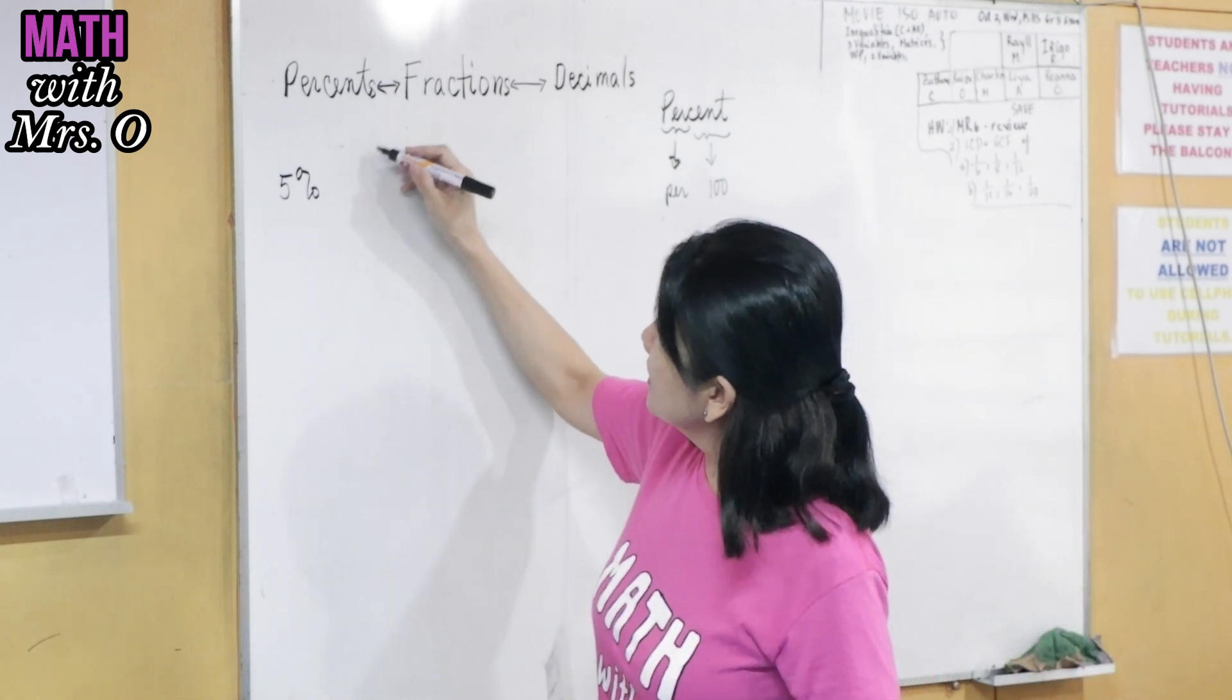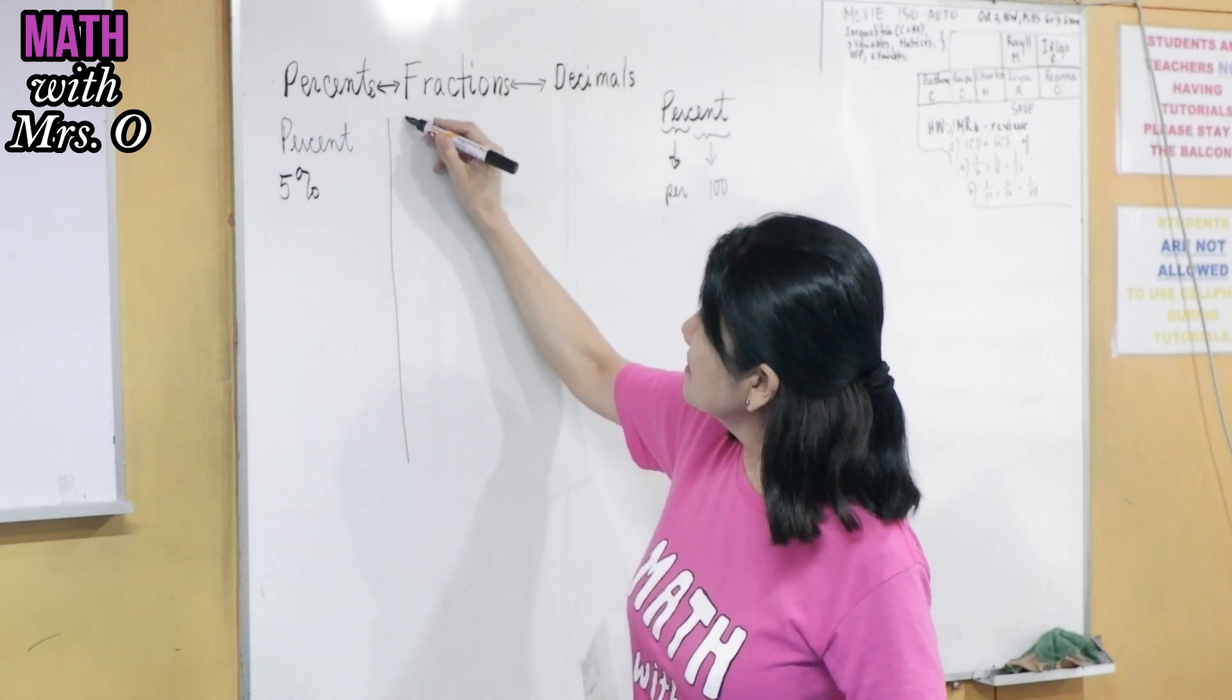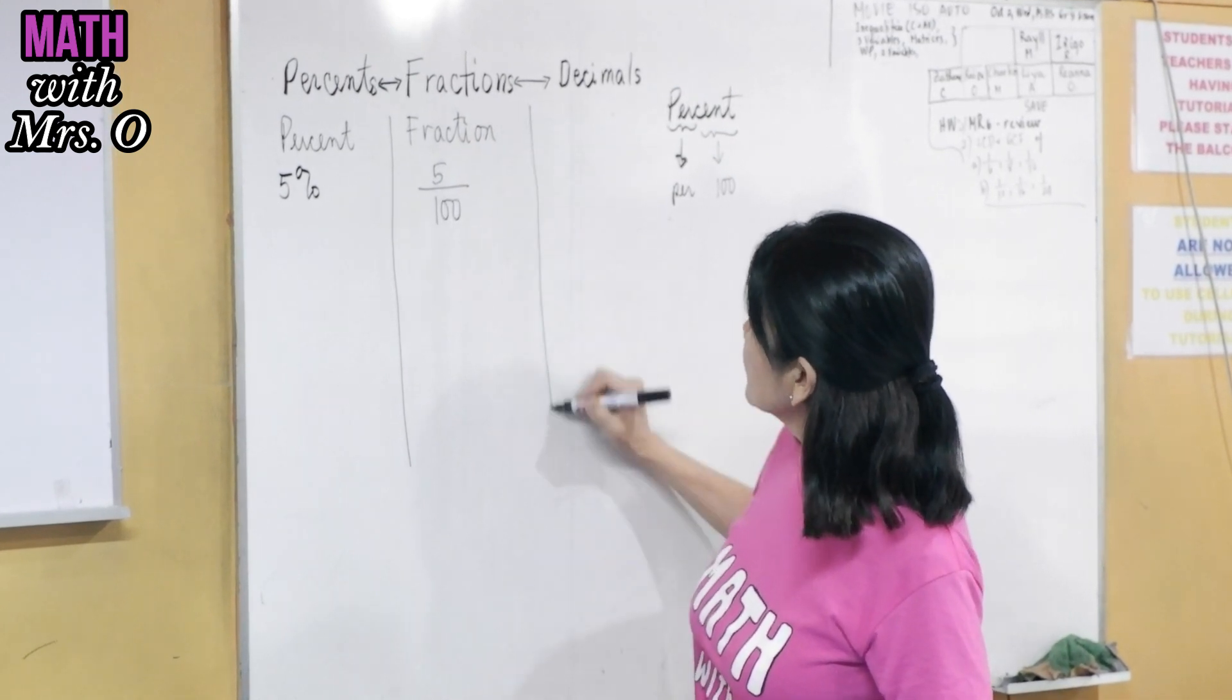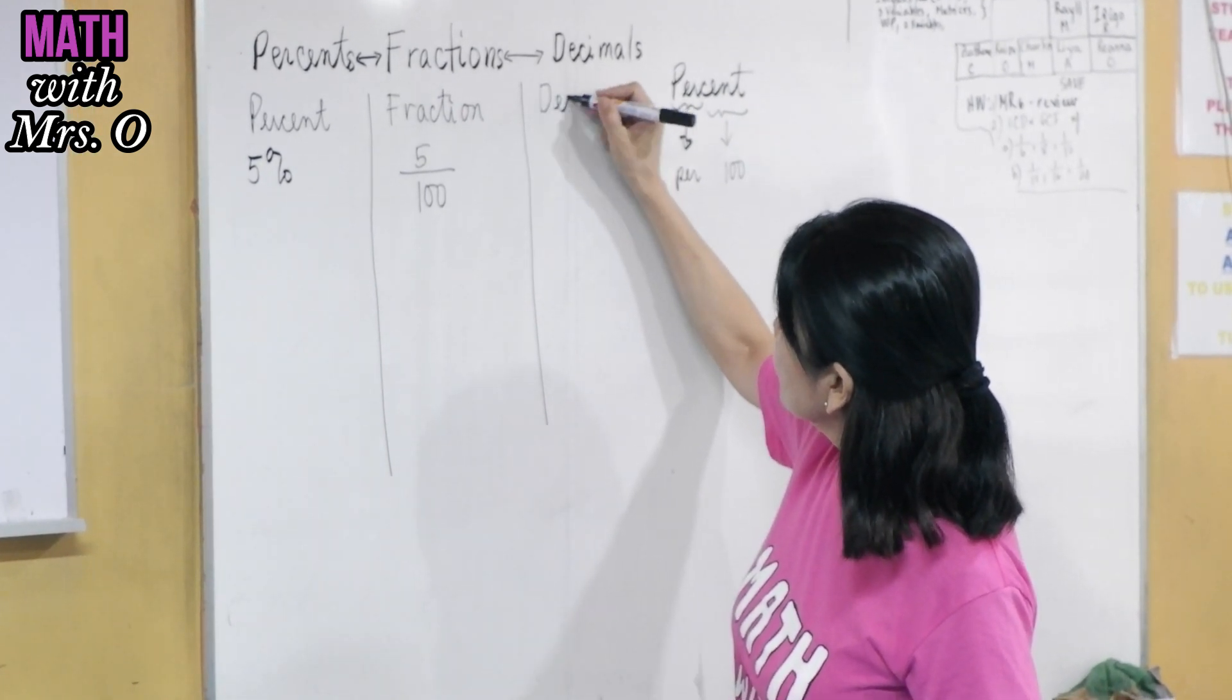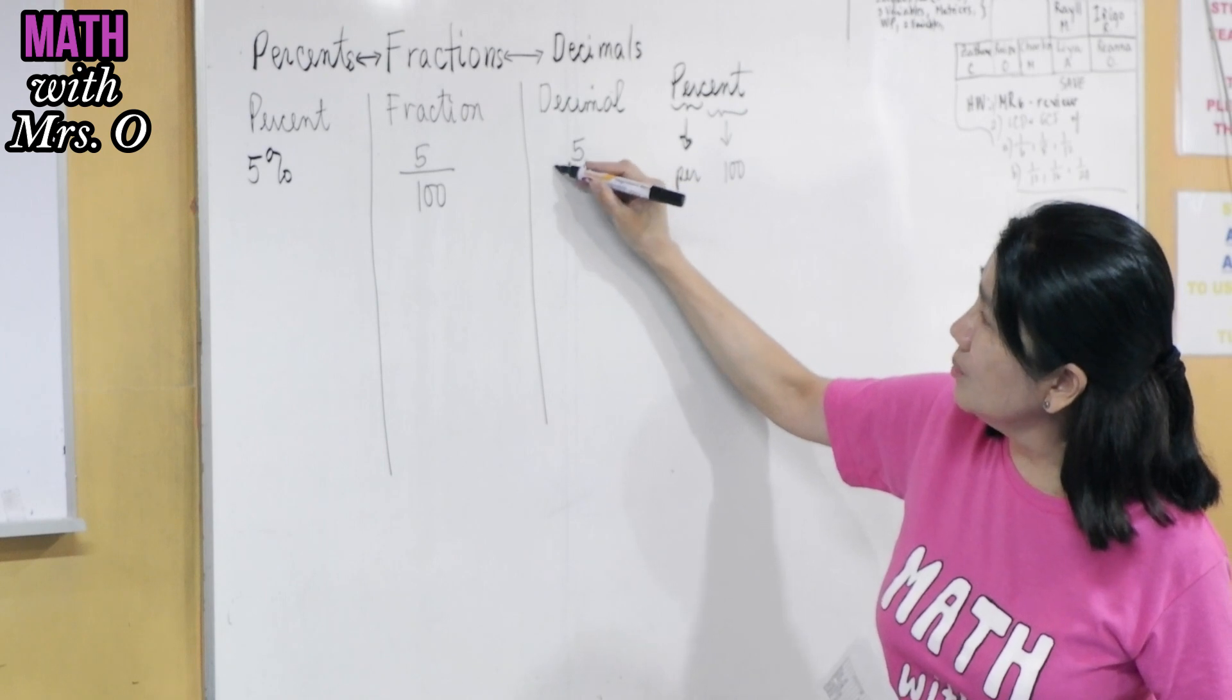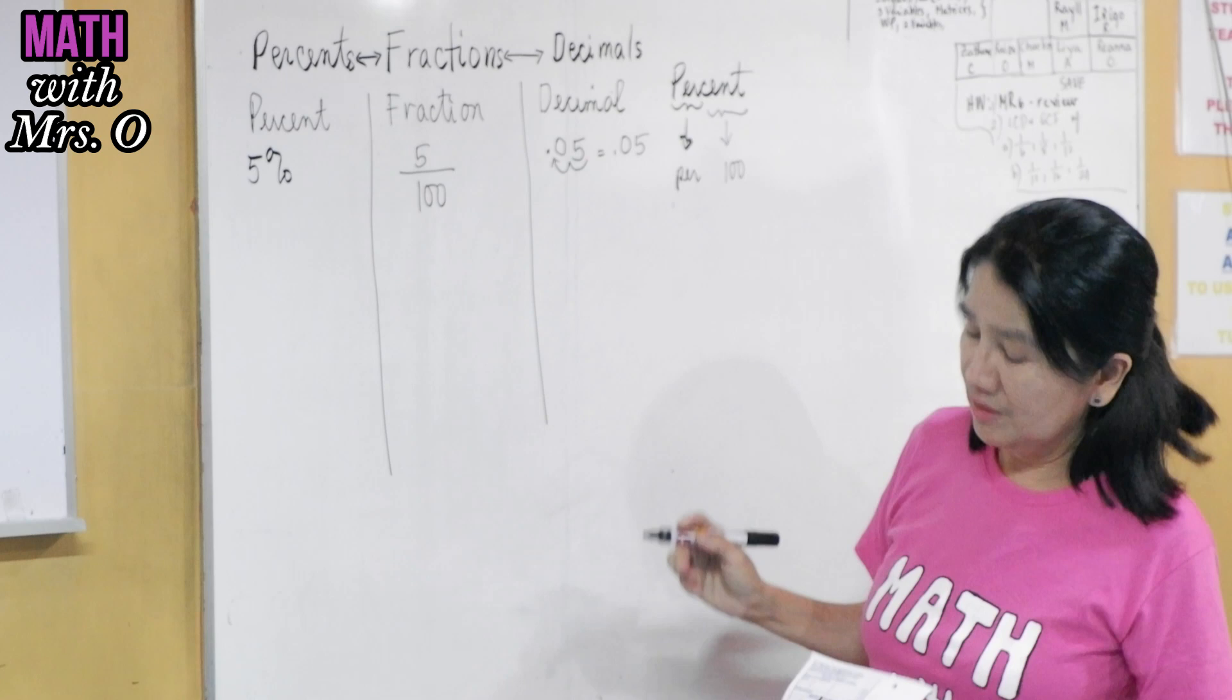So if we have here five percent, then as a fraction you can write it as five per hundred. So this is 5/100. And as a decimal, how do we write this? 0.05. Why? 5 per 100 would mean you move it two places to the left. You move the decimal point two places to the left. So you're now getting here a 0.05.